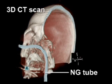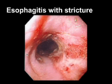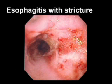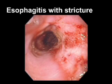Nasogastric intubation should be avoided in patients with significant maxillofacial trauma, as the tube may enter the cranial vault if the thin cribriform plate has been disrupted. The procedure should also be avoided in patients with known esophageal abnormalities, such as recent caustic ingestion, diverticulae, or strictures, as they are at high risk for esophageal perforation.